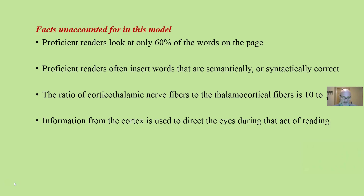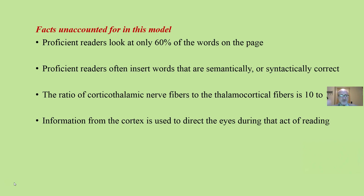Some facts. Remember, a theory is used to explain a set of facts, but here are some facts that the phonological processing model does not account for. Proficient readers do not stop at every word — only 60% of the words their eyeballs stop on. Proficient readers often insert words that are not on the page but are semantically or syntactically correct. Also, the ratio of corticothalaminic nerve fibers to thalamocortical fibers is ten to one. And it does not account for the idea that information from the cortex is used to direct the eyes during reading.